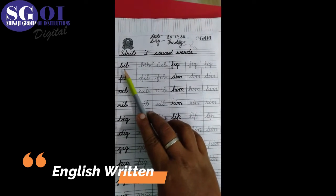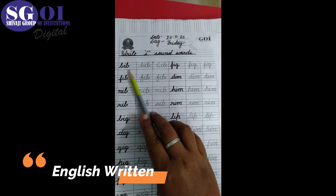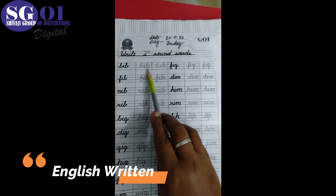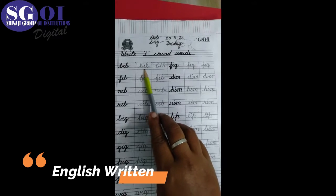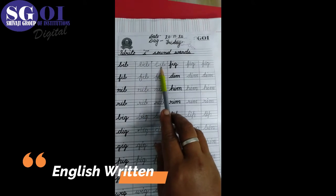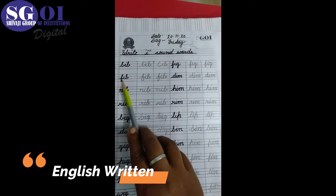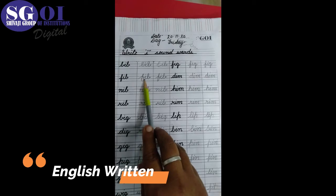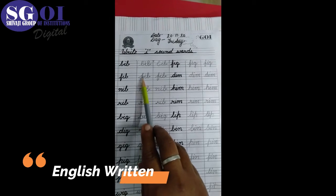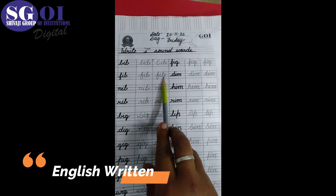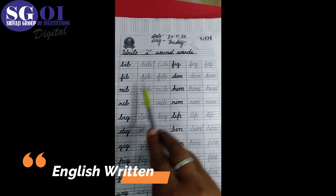First is B-I-B, Bib. So here we will write two times: Bib, Bib. Next is F-I-B, Fib — write two times: Fib, Fib.